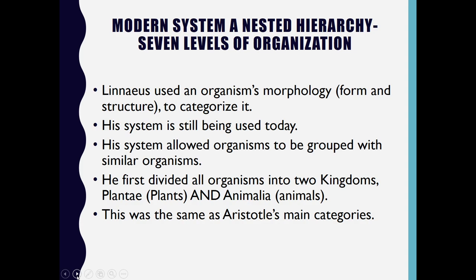Linnaeus used an organism's morphology to categorize it. His system allowed organisms to be grouped with similar organisms. He first divided all organisms into two kingdoms — Plantae and Animalia — which was similar to Aristotle's main categories.